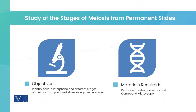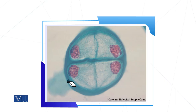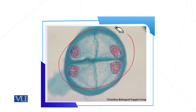Your task is to identify different stages of meiosis through the provided permanent slide, using a microscope that will be provided by the teacher. Here is an example: because there are four daughter cells visible, you can easily conclude that it is telophase 2, since four daughter cells are produced at that stage.